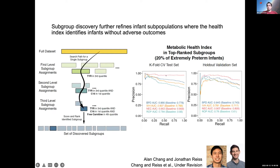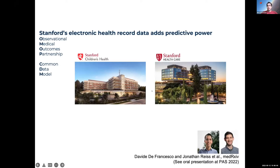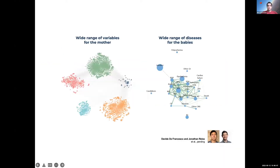One example: necrotizing enterocolitis is a complication often diagnosed several weeks after birth, with only aggressive surgery as recourse by the time it's diagnosed, and poor outcomes. We show we can predict it at birth. Interventions like antibiotics and delayed feeding can prevent that eventual surgery. The next step was to connect this to STARR-OMOP — we built a linkage between the children's hospital OMOP data and the adult hospital OMOP data.